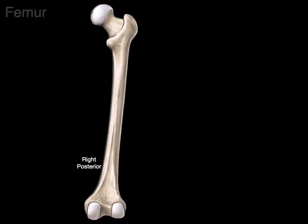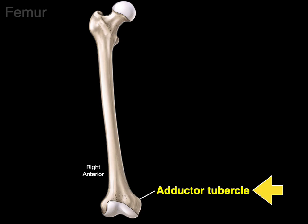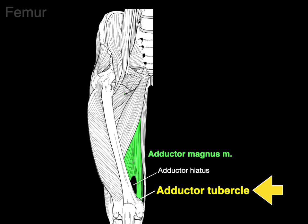Now we're looking at the anterior view of the femur on the right side. There's a bony prominence on the medial distal part of the femur called the adductor tubercle. The adductor magnus — shown in green — attaches to the adductor tubercle. Between the linea aspera and that attachment is a space called the adductor hiatus, where the femoral artery and vein traverse to get to the popliteal fossa and become the popliteal artery and vein.